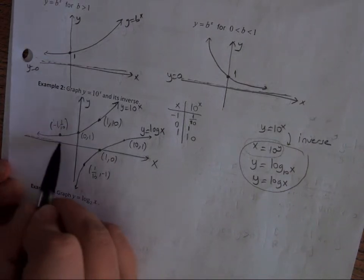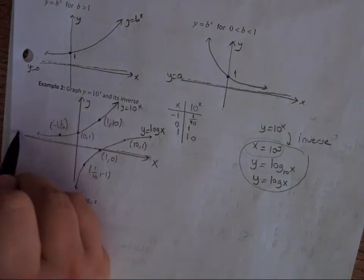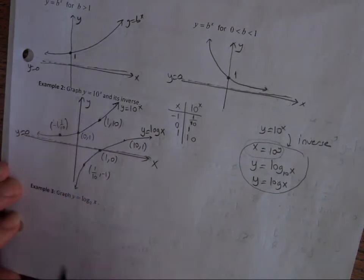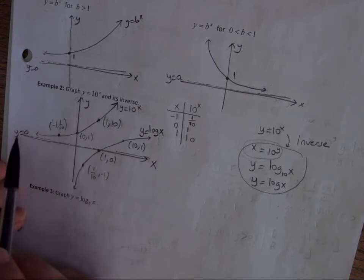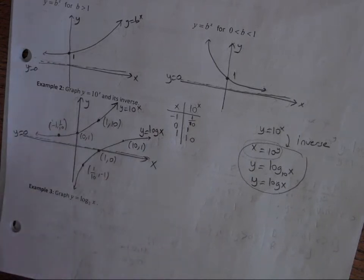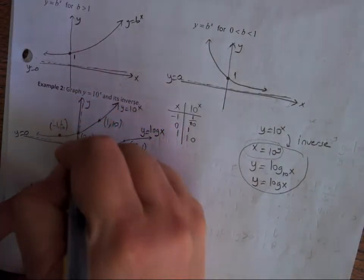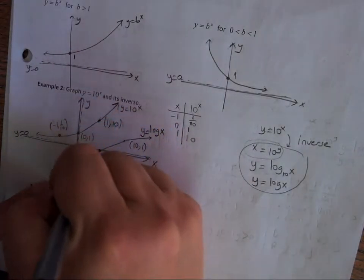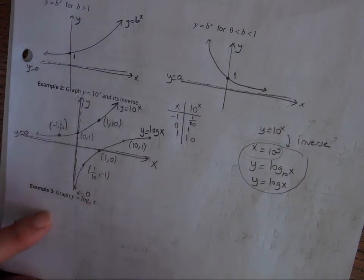The function y = 10^x has a horizontal asymptote at y = 0. For y = log x, since we replace every x with y and every y with x, the asymptote becomes x = 0, which is a vertical asymptote.